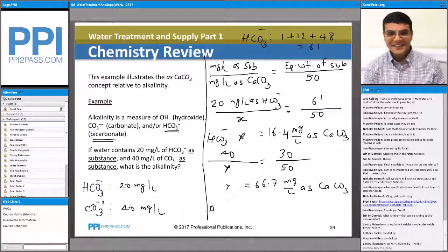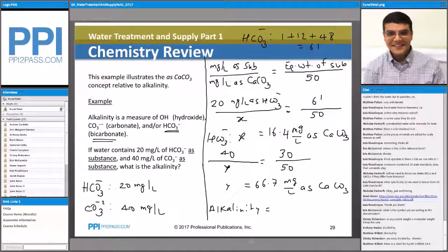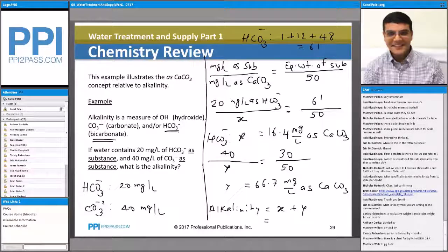So the total alkalinity is the bicarbonate plus carbonate, and you get 83.1 milligrams per liter as calcium carbonate.